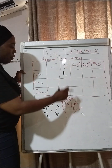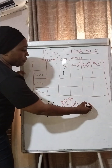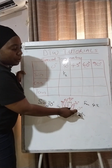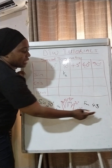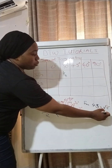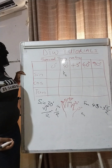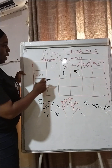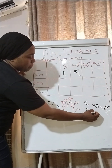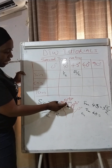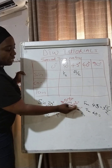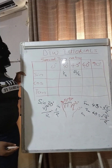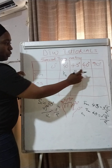Now let's treat sine 45. Same logic — you cross the 45-degree finger. How many fingers do you have on the right side? Two. So that would be the square root of two over two. Now let's do sine 60. We cross the 60-degree finger — how many fingers do we have on the right? Three. So the square root of three over two — that is sine 60.